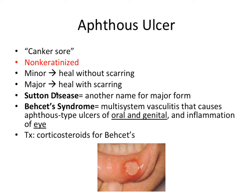There are different sizes. There's a minor form, which heals without scarring, and a major form, which heals with scarring — an easy thing to commit to memory. Sutton disease is another name for the major form, the larger aphthous ulcers.